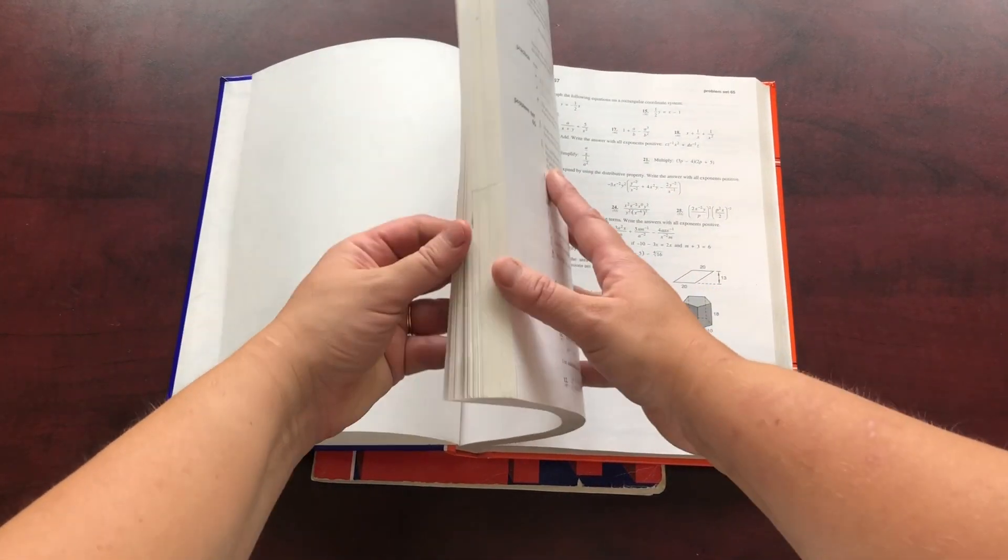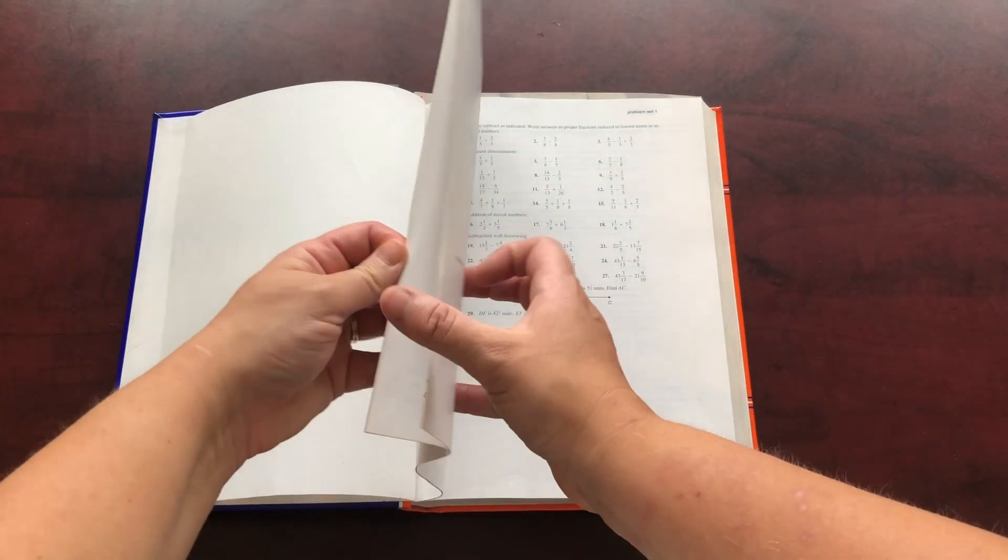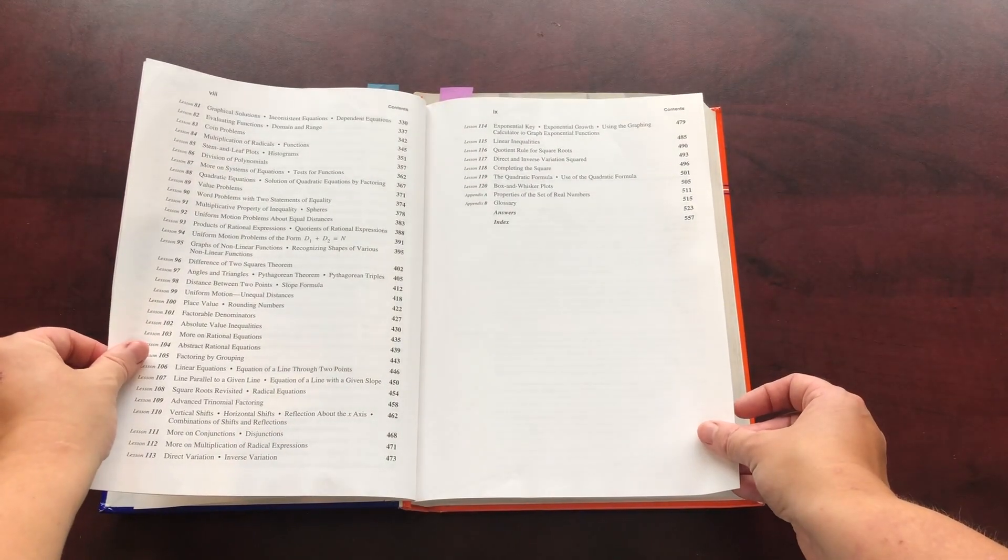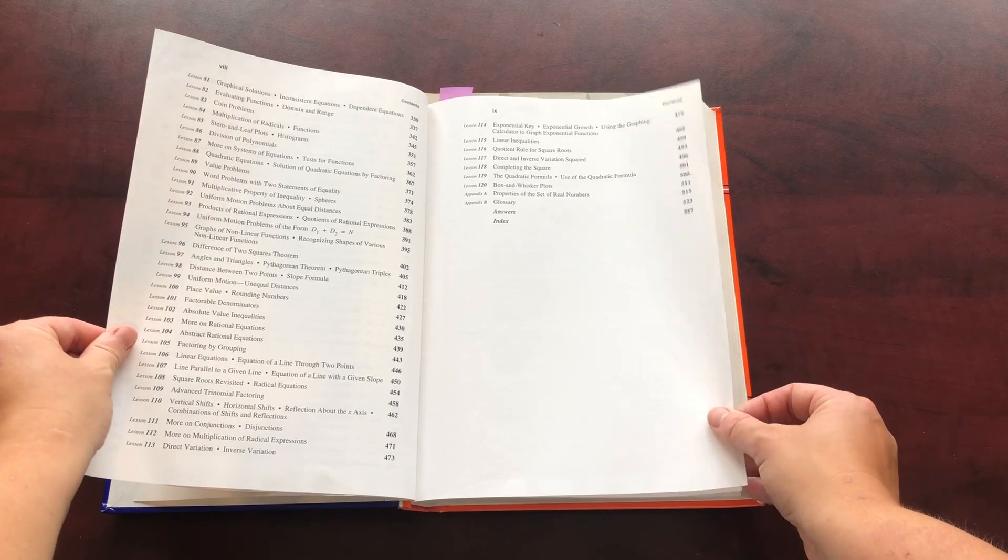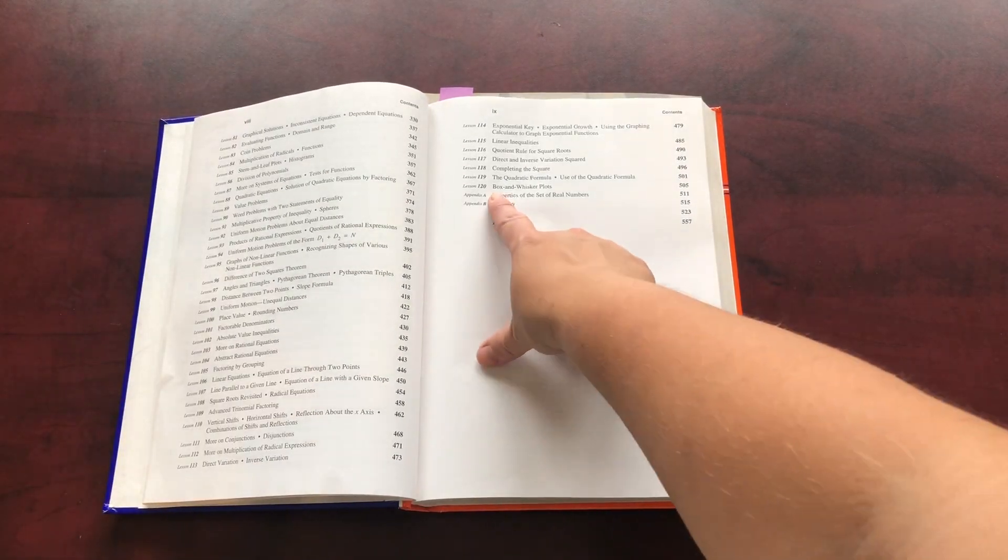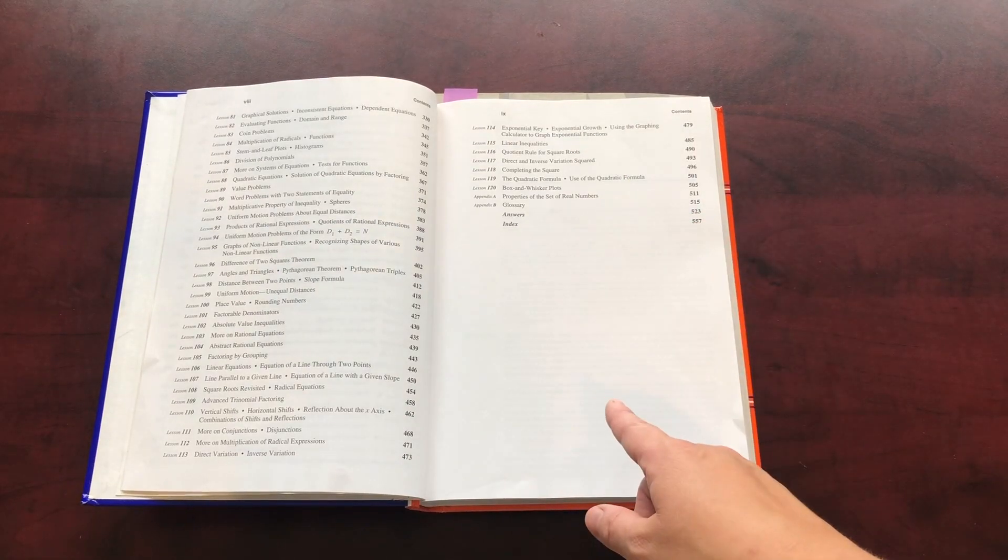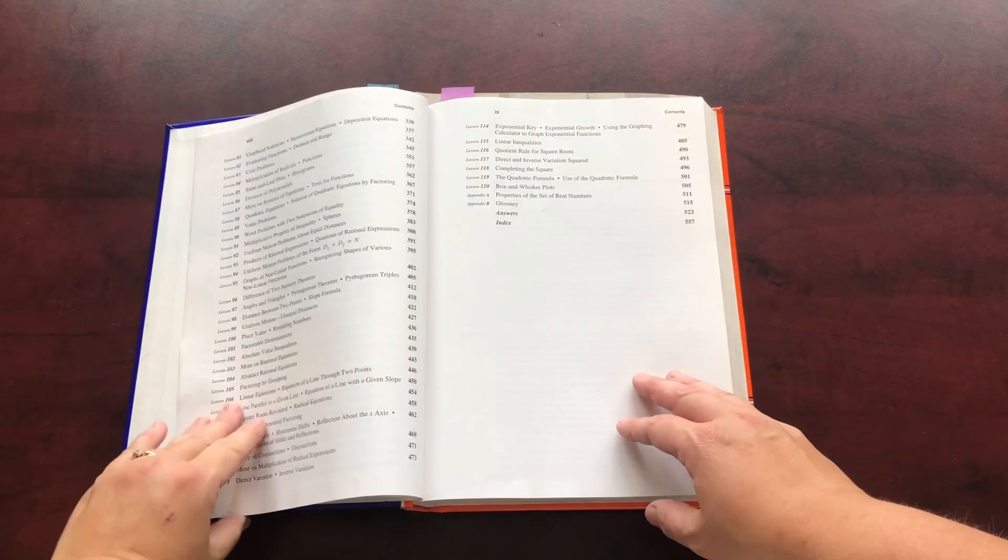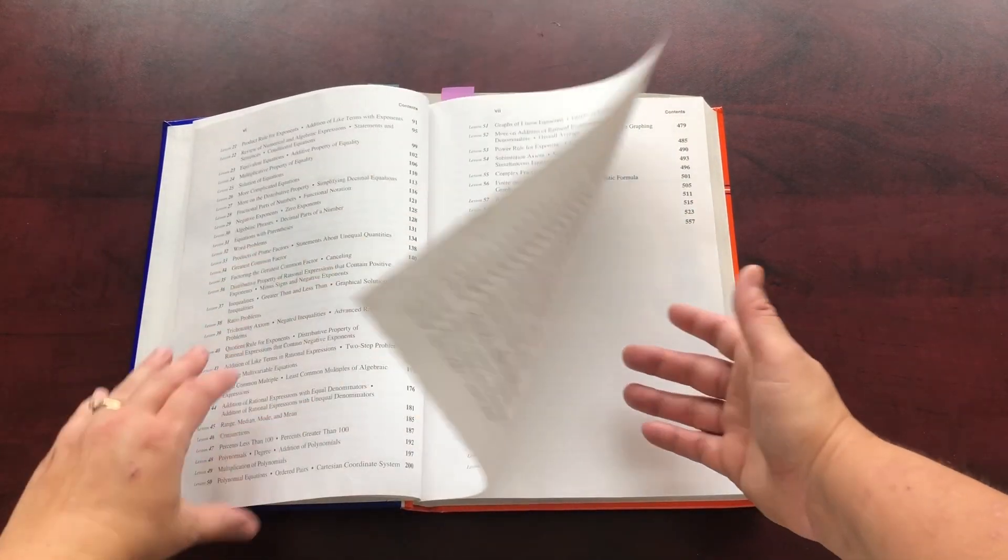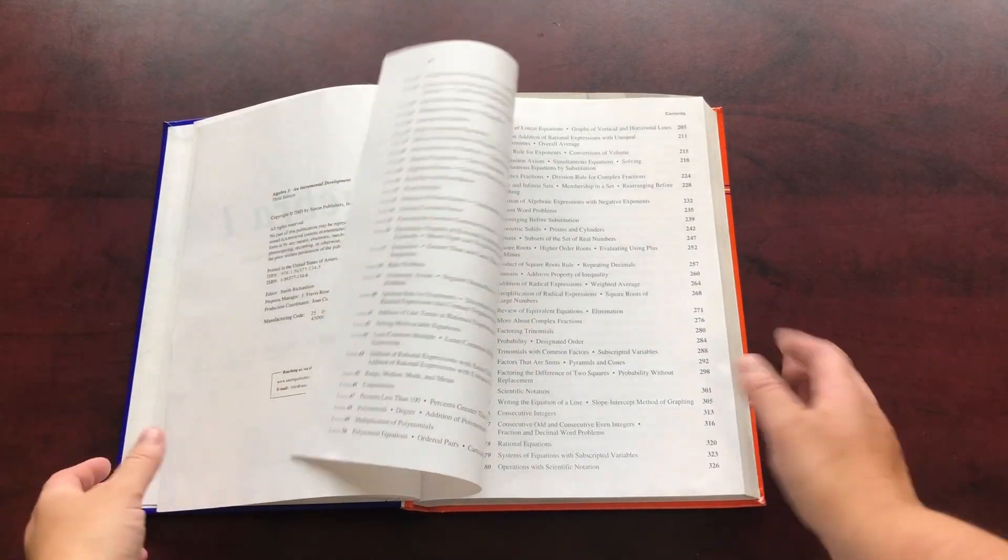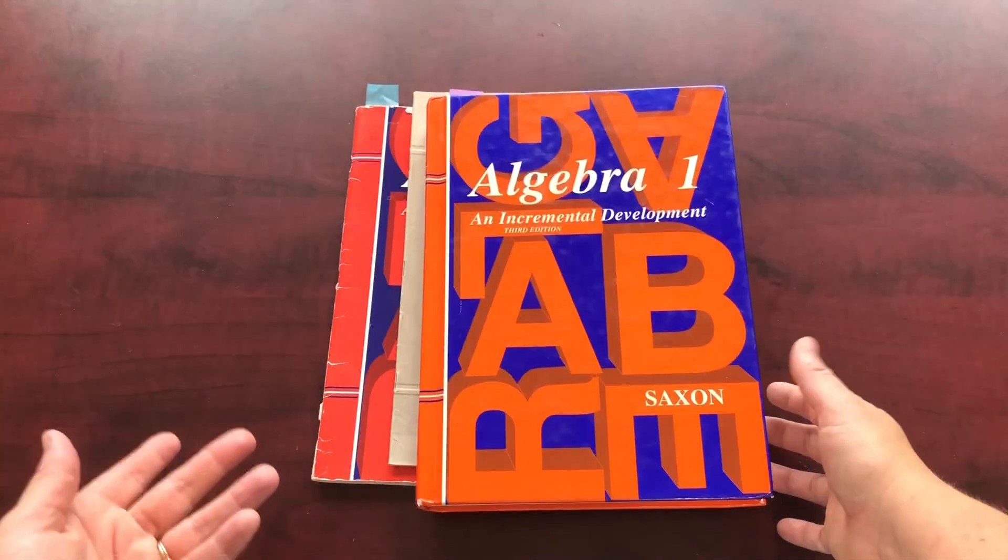If I remember correctly, how many lessons does this one have? I want to say 129. Nope, this one only has 120. So this one has less than the Algebra half in it. But again, there's the Table of Contents, saying what they're going to cover. And it's very much similar to the other level.